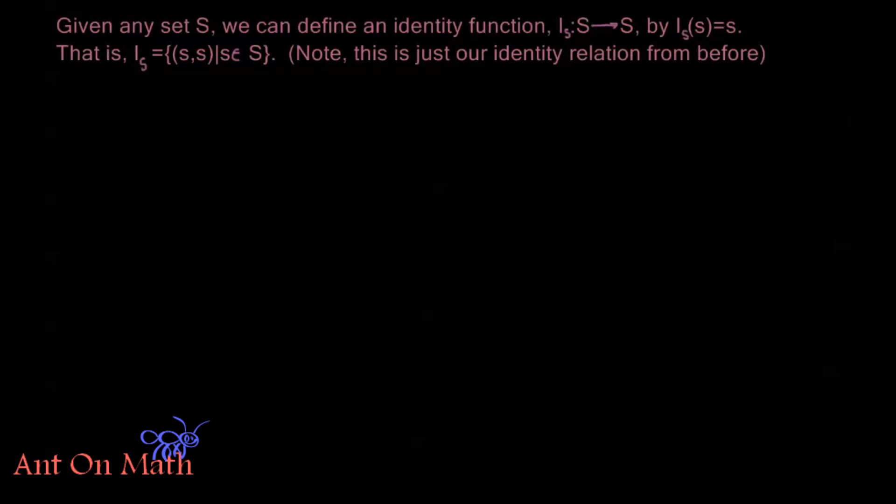But first I need to define something, I need to define my identity function. So given any set S, we can define an identity function, I_S from S to S, by I_S(s) equals s. That is, I_S equals the set of all ordered pairs (s,s) for all of the elements s in the set S.